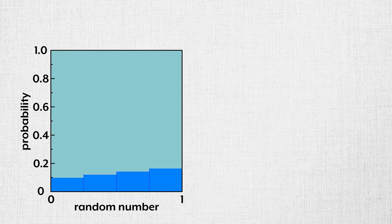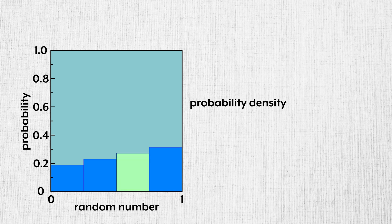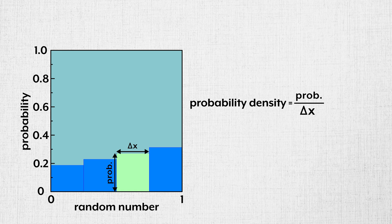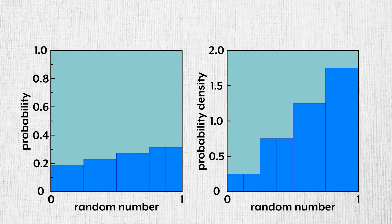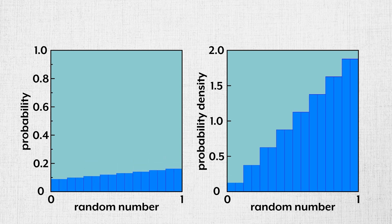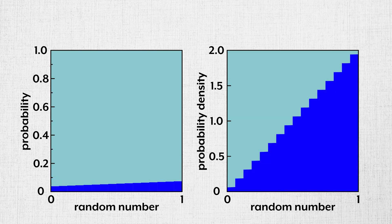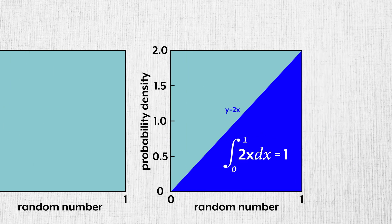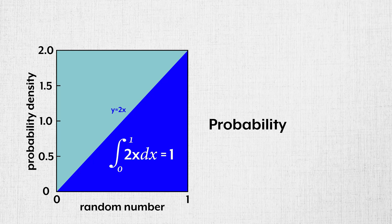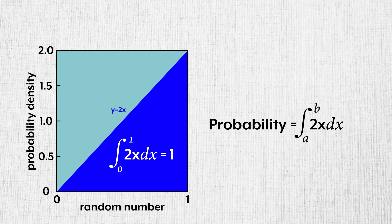So what we do to sidestep this paradox is work with probability density. The probability density of a range is the probability of an occurrence in that range divided by the width of that range. And we do this because the probability density doesn't shrink to 0 as we refine the ranges.